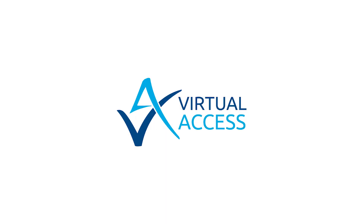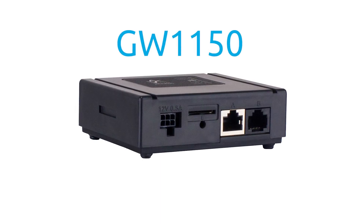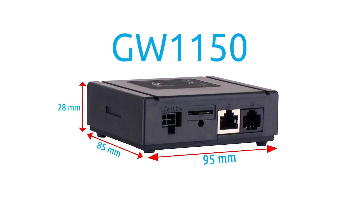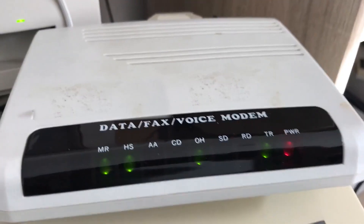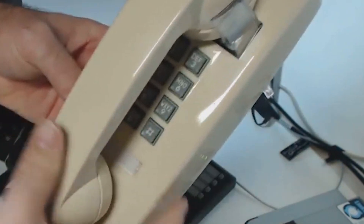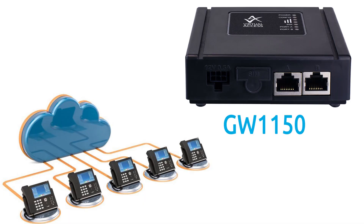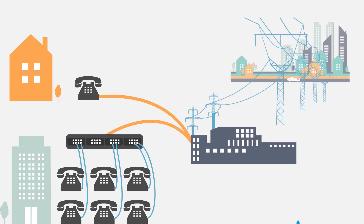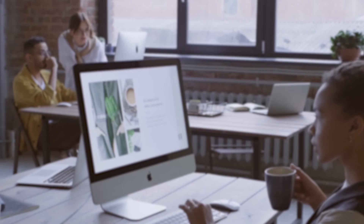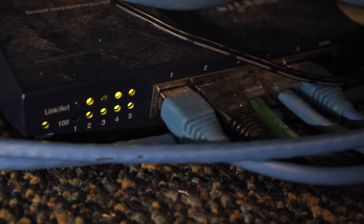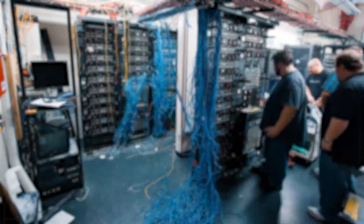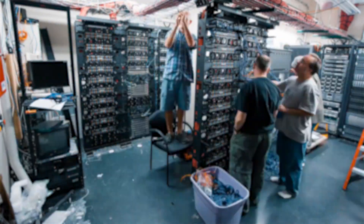The Virtual Access GW1150 router is a compact 4G LTE router designed as an analog telephone adapter to migrate customers' traditional dial-up modem or analog telephone services to voice over IP. This enables devices with telephone line interfaces to access the network over LTE. It is ideal for companies who may have dial-up modems in their system and where devices are so integrated with their operations that a move to a new mobile system would be impractical.